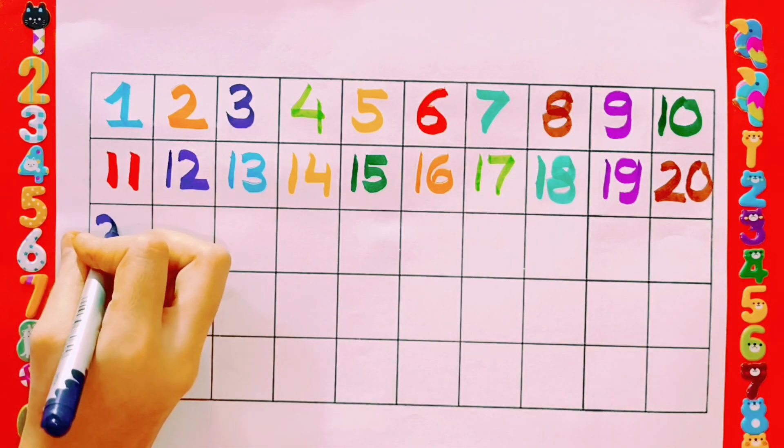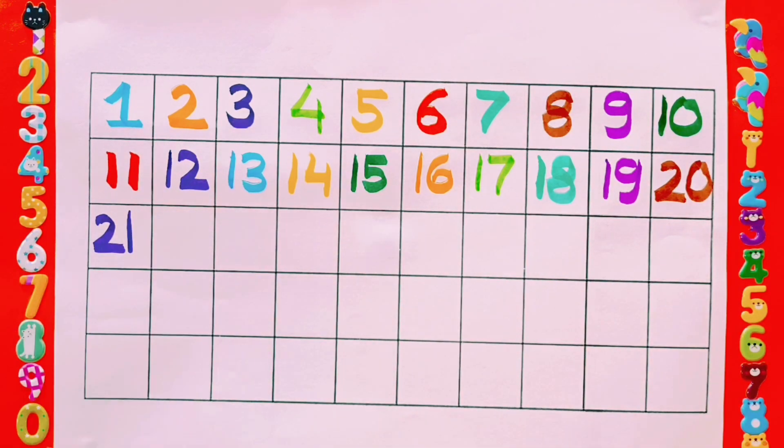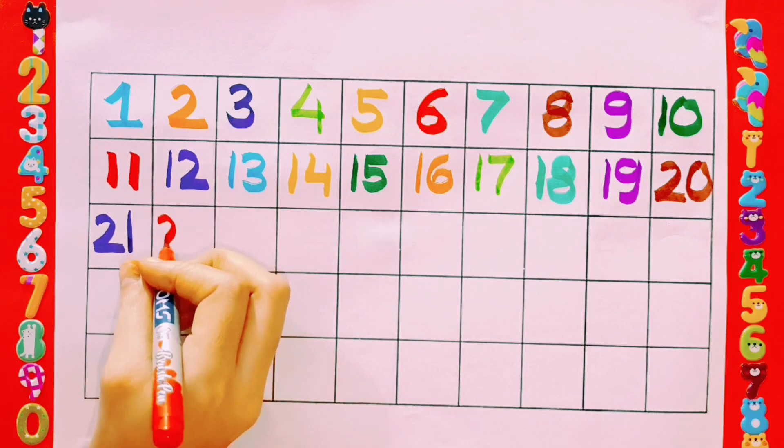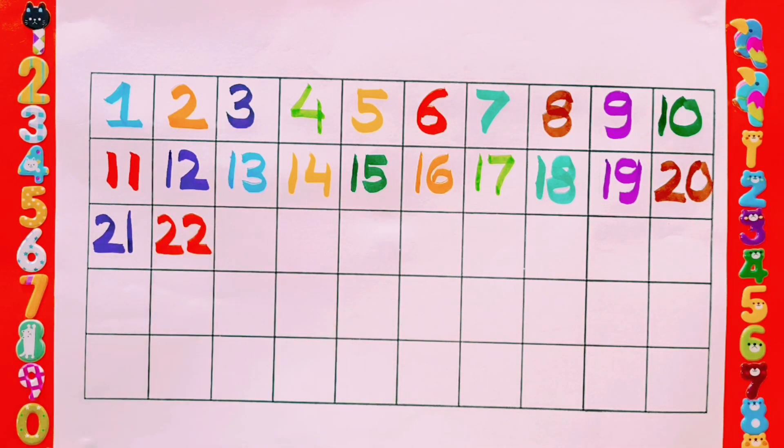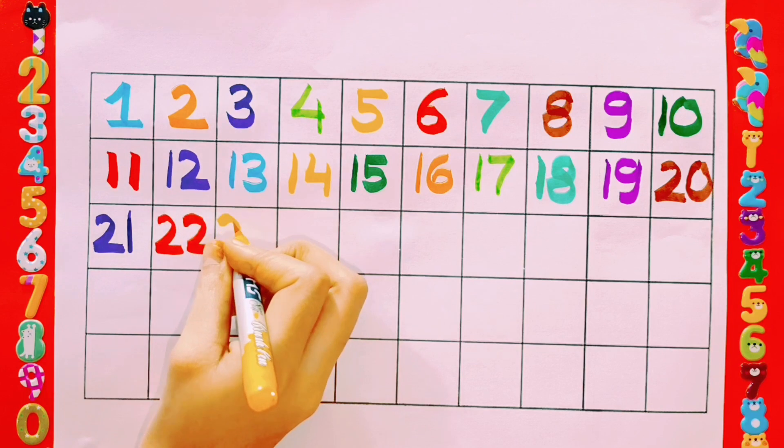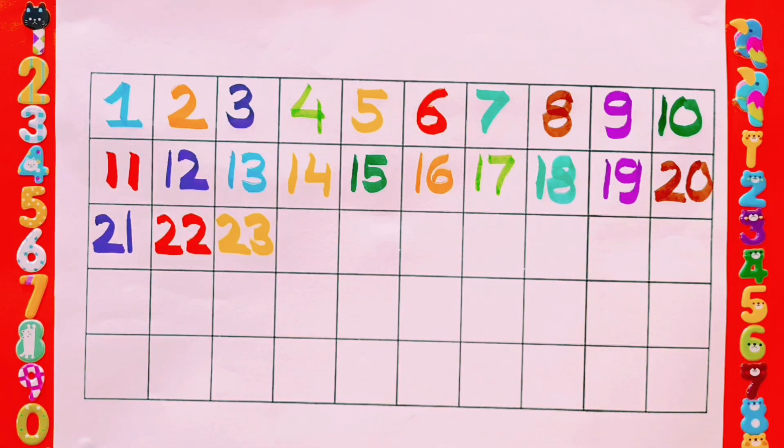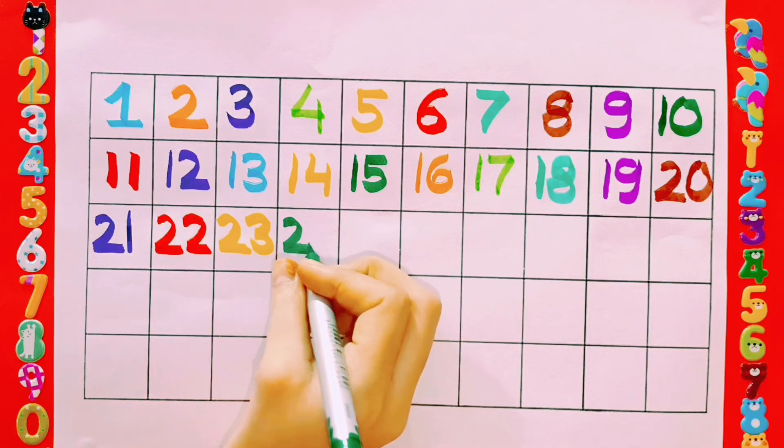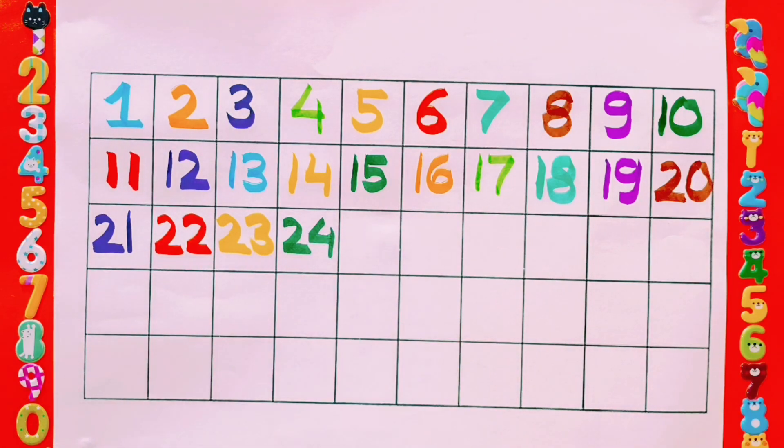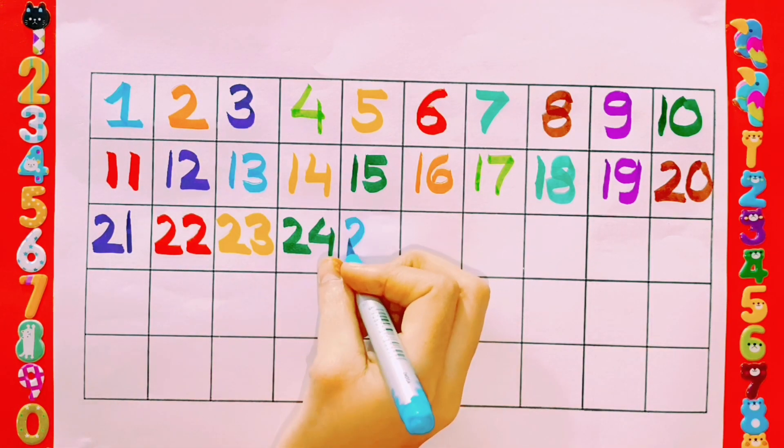21, 20, 21, 21, 22, 22, 22, 23, 23, 23, 23, 24, 24, 25, 25.